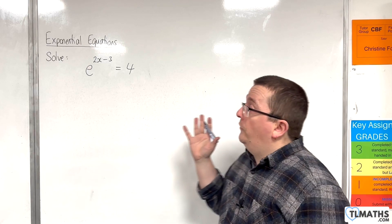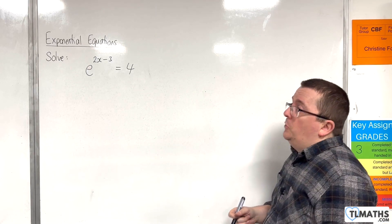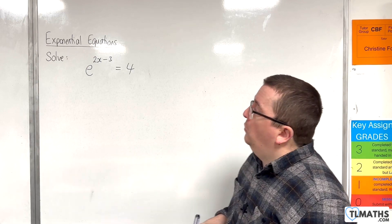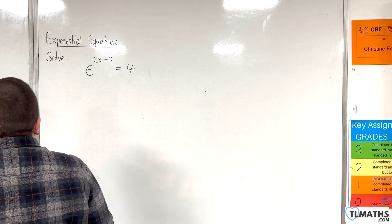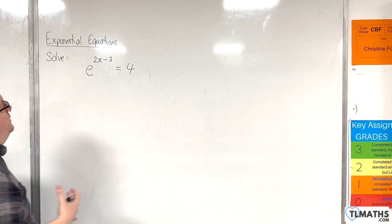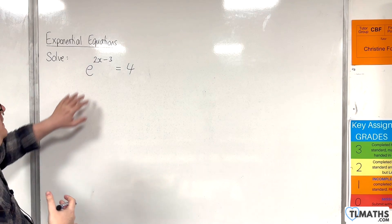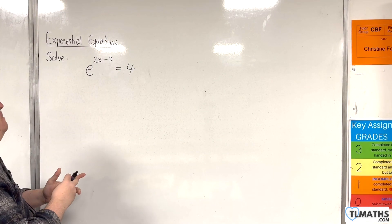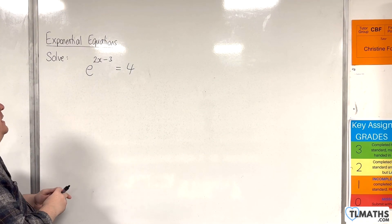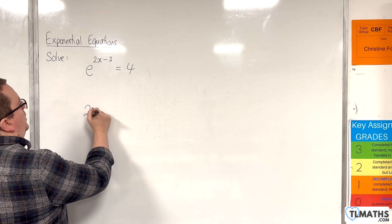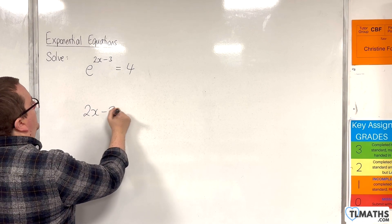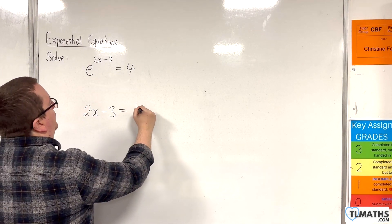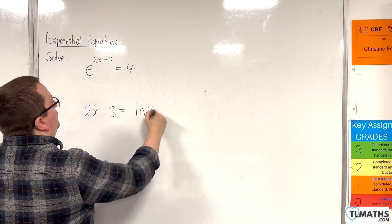In this video I want to solve e to the 2x take away 3 equals 4. You could go straight from exponential form to logarithmic form by writing 2x take away 3 is going to be log base e of 4, so ln of 4.